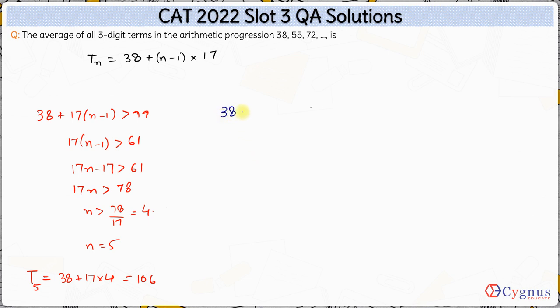Now let us find out the highest such three digit term. So we have 38 plus 17 times n minus 1 is 17n minus 17, this should be less than or equal to 999 or let us simply do one thing, this should be less than 1000.